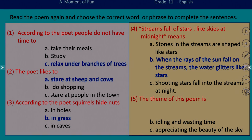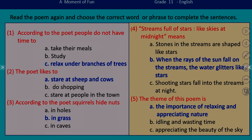Now we have come to the last question of the activity. What do you mean by the theme? Theme is the message that the poet tries to convey. So here the theme is: the importance of relaxing and appreciating nature.